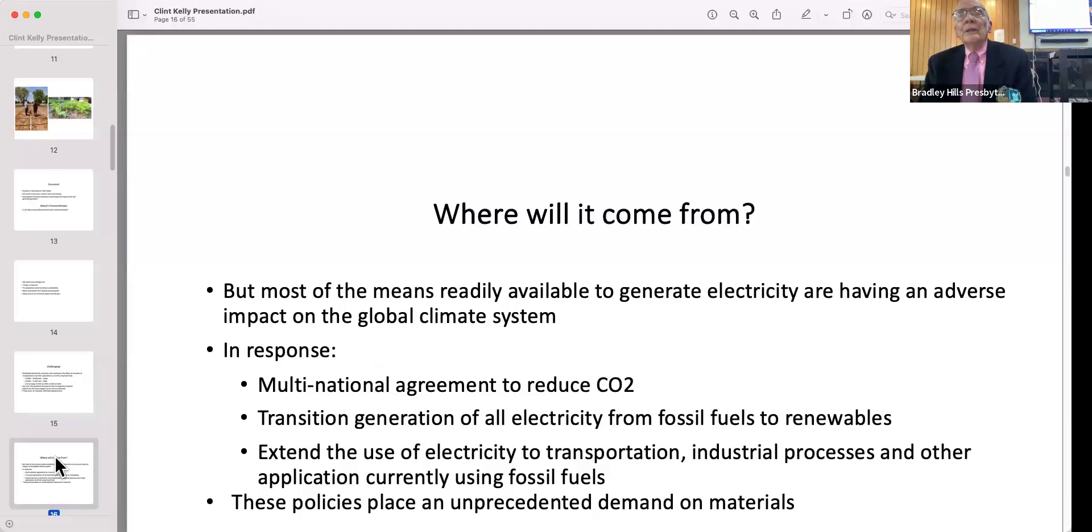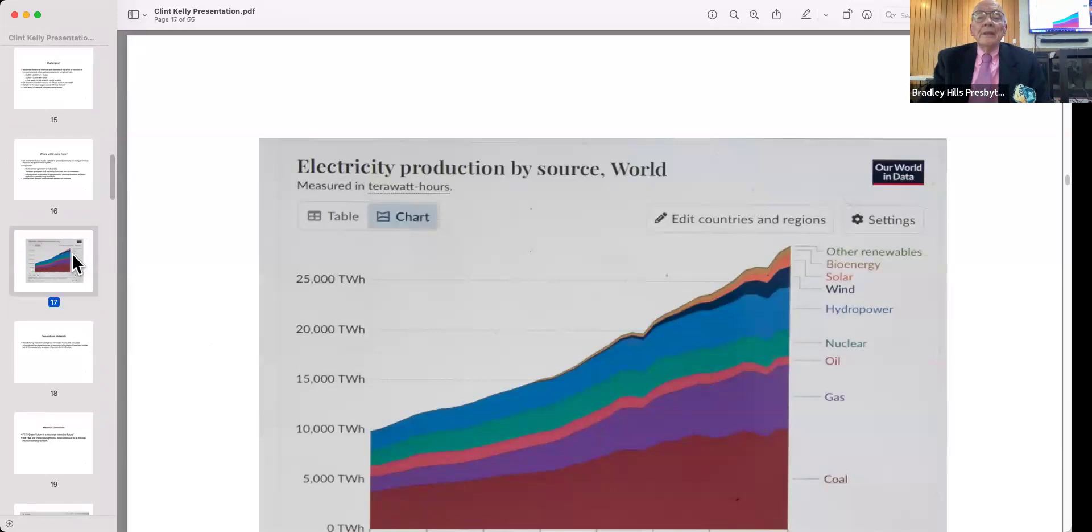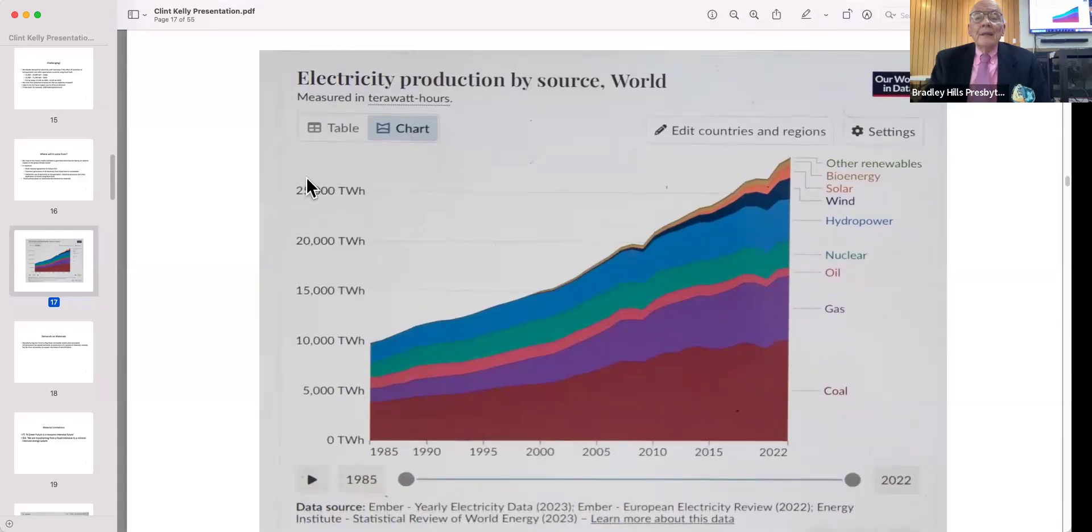The problem is that most of the means that we have to create electricity today—worldwide about 60 percent—are fossil fuel: coal and natural gas. The multinational agreement says we're going to replace all of that primarily with renewables, primarily with wind and solar. My argument to be made shortly is that you probably can't get there from here. You can see working from the bottom to the top: coal, gas, oil, and nuclear, and everything else is a much smaller fraction of total generating capacity.